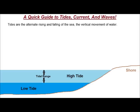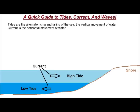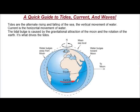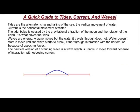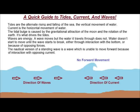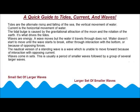Tides are the alternate rising and falling of the sea — the vertical movement of water. Current is the horizontal movement of water. The tidal bulge is caused by the gravitational attraction of the moon and the rotation of the earth — it's what drives the tides. Waves are energy. A wave moves, but the water it travels through does not. Water doesn't start to move until the wave starts to break, either through interaction with the bottom or because of opposing forces. In physics, a standing wave is a wave which oscillates in time, but the amplitude profile does not move in space. The nautical version of a standing wave is a wave which is unable to move forward because of the interaction with opposing current. The point is that it is current that causes the wave to break, not interaction with the bottom. And lastly, waves come in sets — usually a period of smaller waves followed by a group of several larger waves.